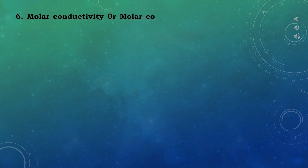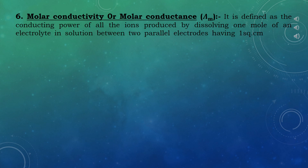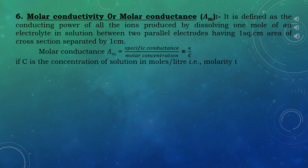The sixth term is molar conductivity or molar conductance, represented by λM. It is defined as the conducting power of all the ions produced by dissolving one mole of an electrolyte in solution between two parallel electrodes having 1 cm² area of cross-section separated by 1 cm. So molar conductance λM equals specific conductance divided by molar concentration, represented as κ/C. If C is the concentration in moles per liter (molarity), then λM equals κ × 1000 / M. Its unit is Siemens·cm² per mole.